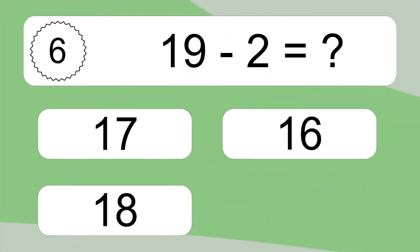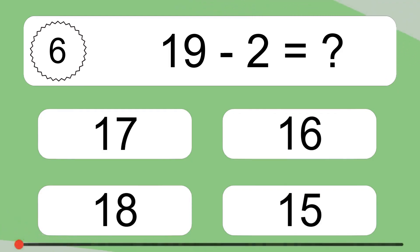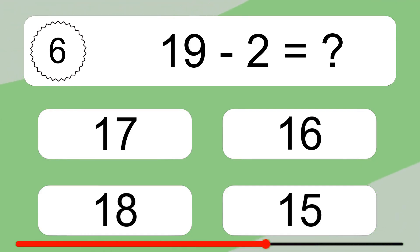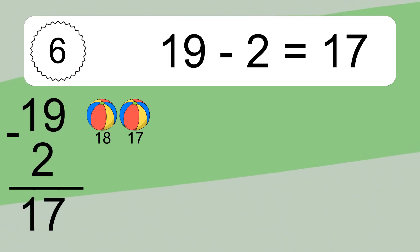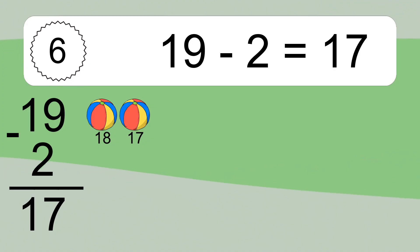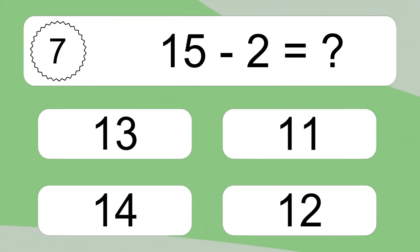19 minus 2 equals what? 19 minus 2 equals 17. Let's count it: 18, 17.